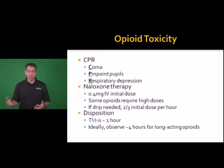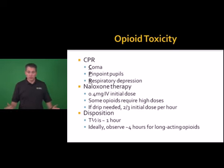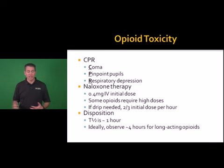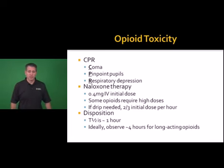A starting dose of 0.4 milligrams IV is typically enough to arouse most opioid toxicities. With synthetics such as fentanyl, higher doses may be required — you can repeat 0.4, double to 0.8, or go to two milligrams. If two milligrams doesn't work, move to other therapies or support their respiratory effort, as it's unlikely opioid toxicity alone is accounting for the toxidrome. If naloxone works but the patient becomes progressively more somnolent after a couple of hours, consider a naloxone infusion.